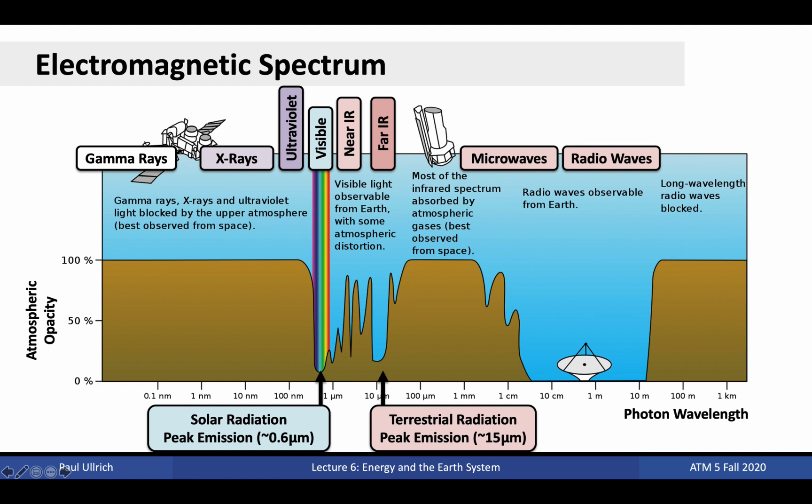On the far left, we have highly energetic gamma rays and x-rays, which are completely blocked by the Earth's atmosphere, but are nonetheless a risk for astronauts. Ultraviolet radiation is mostly blocked, but not completely, and because of its high energy, it does pose a risk to us on Earth. Then, in the visible spectrum, almost all light from the sun passes through without issue.